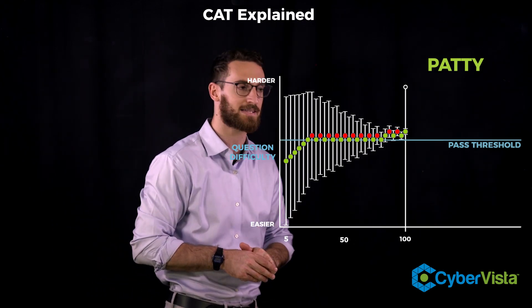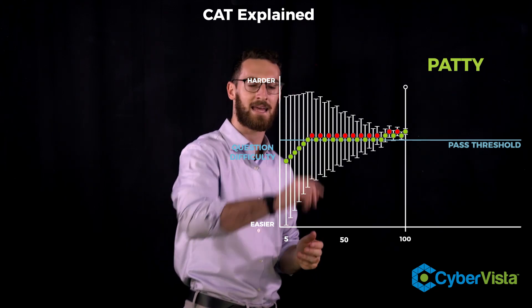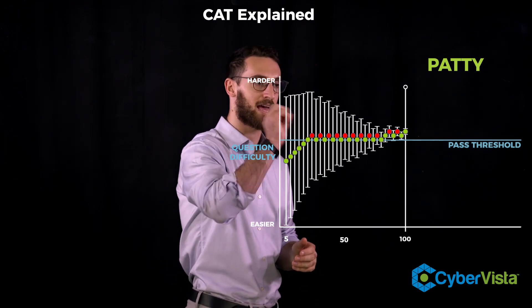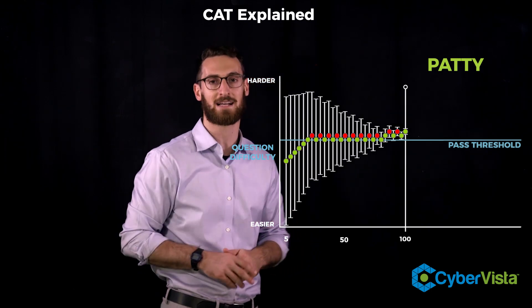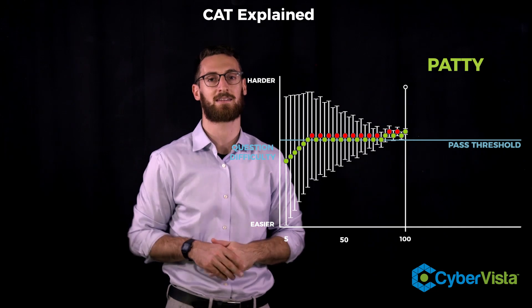So the engine is going to feed you more data. And by question 100, the engine is saying, I am 95% sure that Patty is within this range. And that range is well above the pass threshold. So congratulations, Patty. You are now a CISSP and it's time to go celebrate.